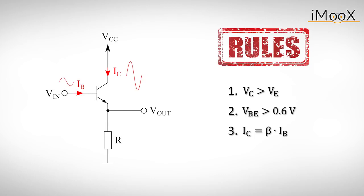The factor by which the current increases is called the current gain beta. We can add this phenomenon to the rules and state that IC is beta times IB. The emitter current IE is then simply the sum of the collector and the base current.